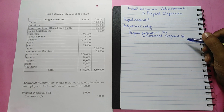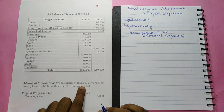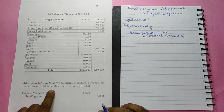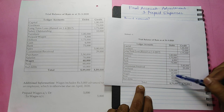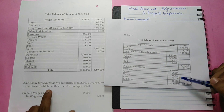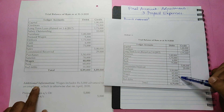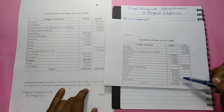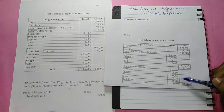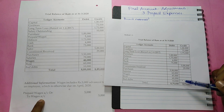Let us have an illustration for better understanding. Consider this adjustment: wages includes Rs 5,000 advance to an employee which is otherwise due on April 2020. In our original trial balance, wages is Rs 45,000. Since this Rs 45,000 includes Rs 5,000 which is advance to an employee due on April 2020, the adjustment entry would be: Prepaid Wages Account debit Rs 5,000 to Wages Account Rs 5,000.